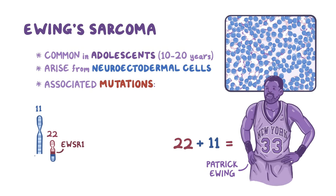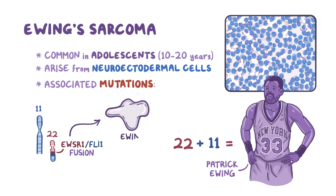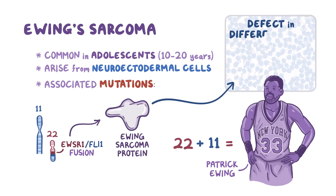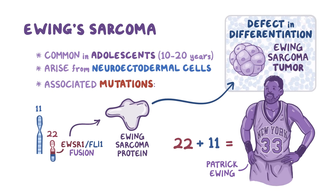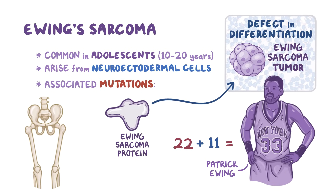The EWSR1-FLI1 fusion results in the expression of an abnormal protein called the EWSR1-FLI1 fusion protein, or more simply, the Ewing sarcoma protein. This protein causes defects in the differentiation process of human mesenchymal stem cells and neuroectodermal cells, resulting in Ewing sarcoma tumor cells. Ewing sarcoma can affect a number of different bones, but most commonly affects the femur and the sacrum.